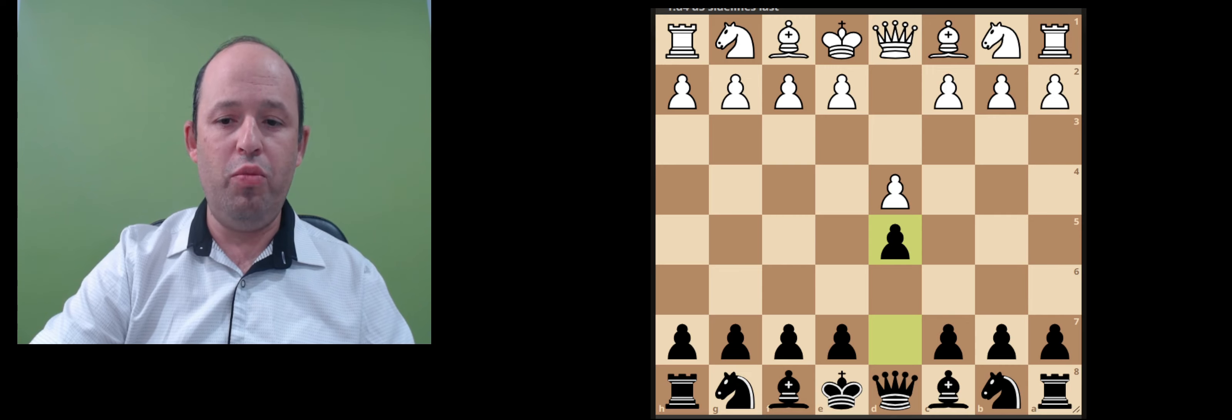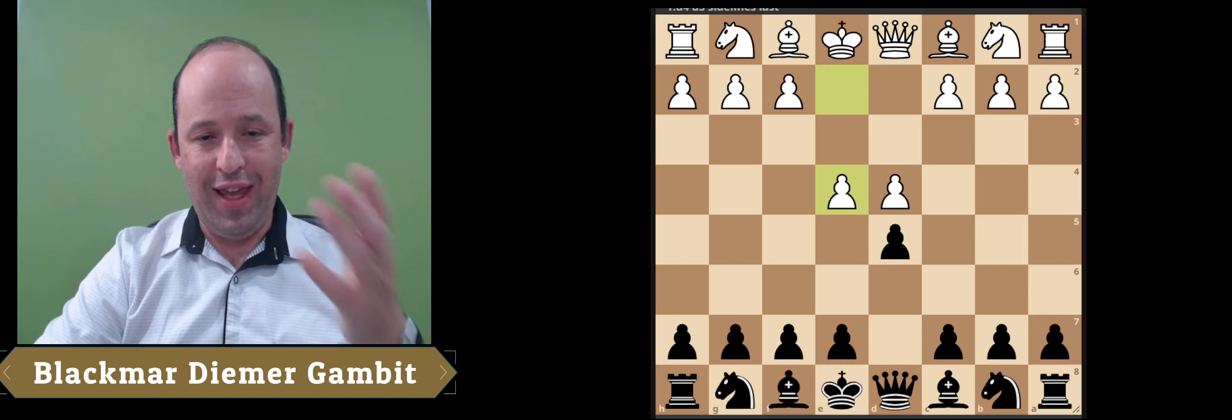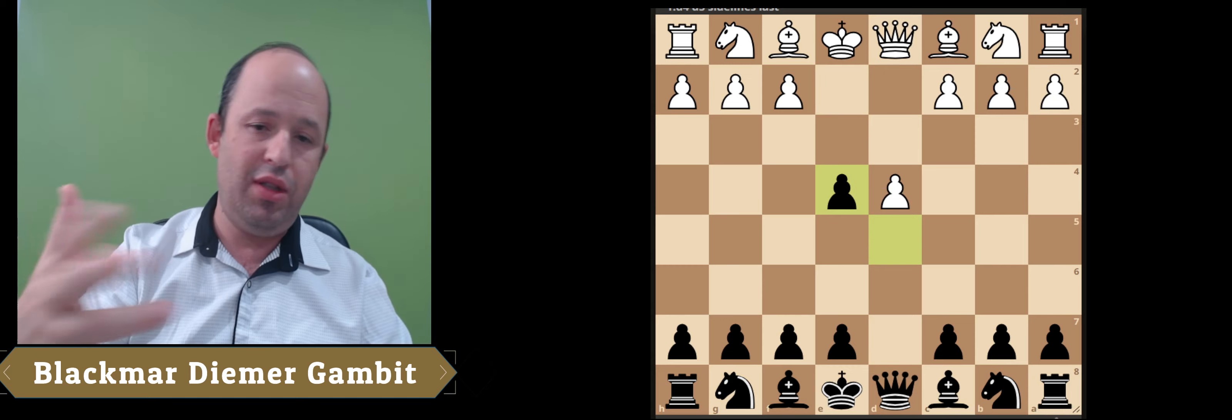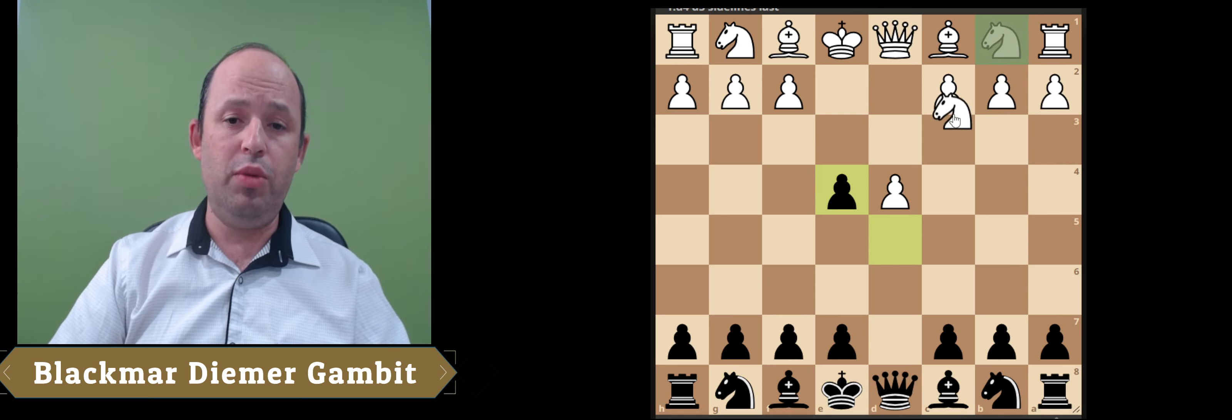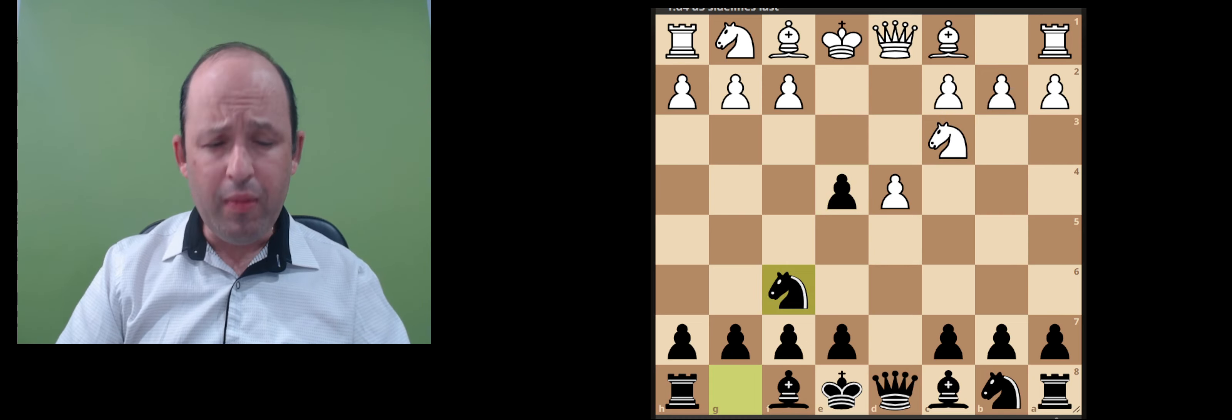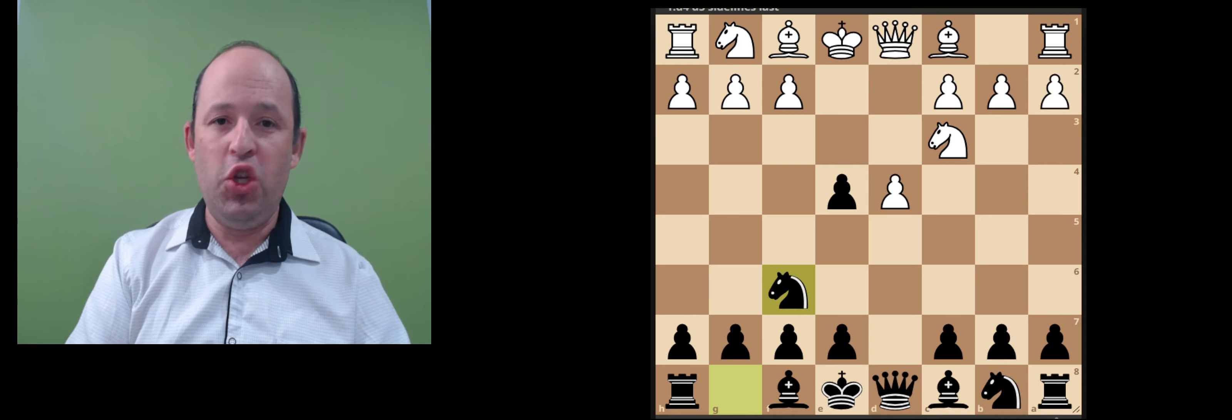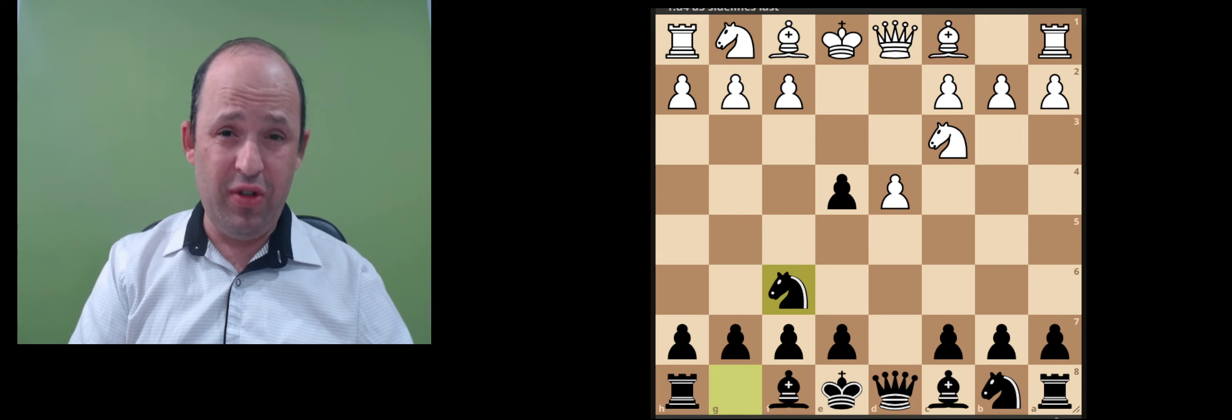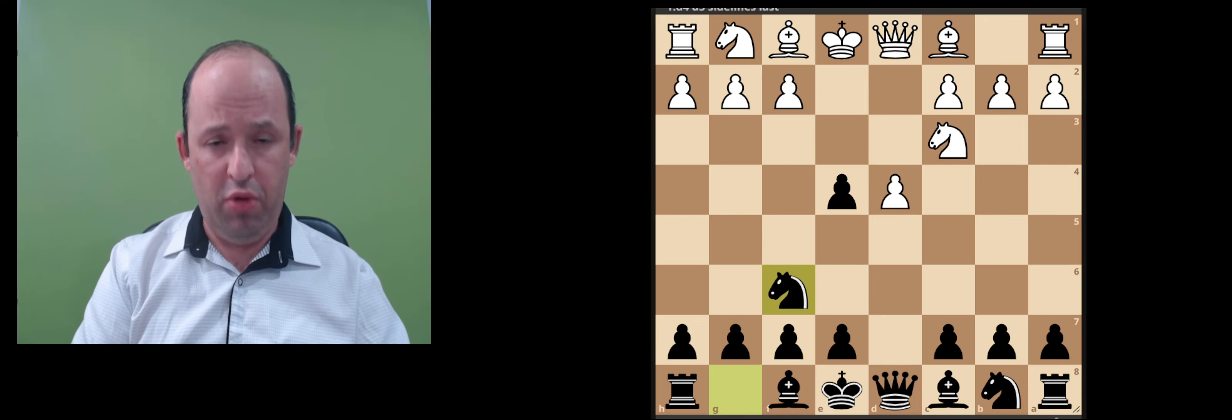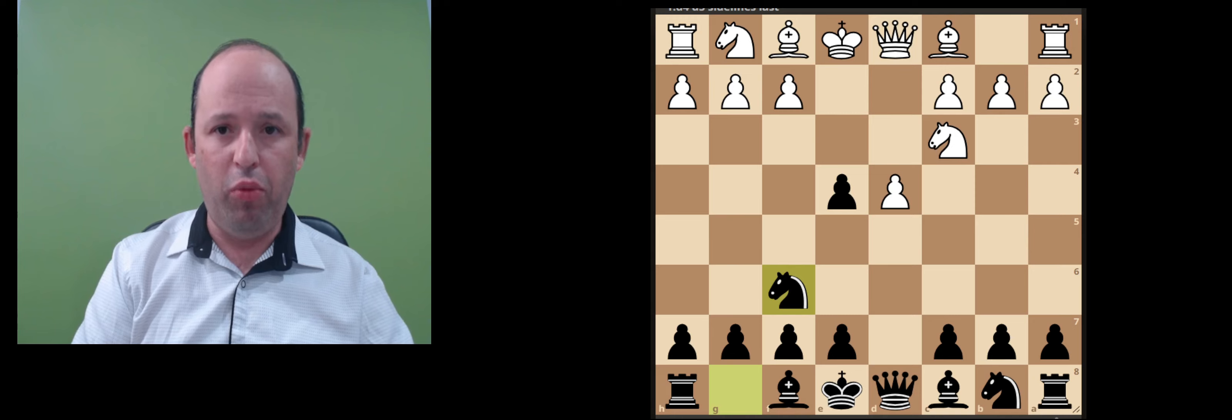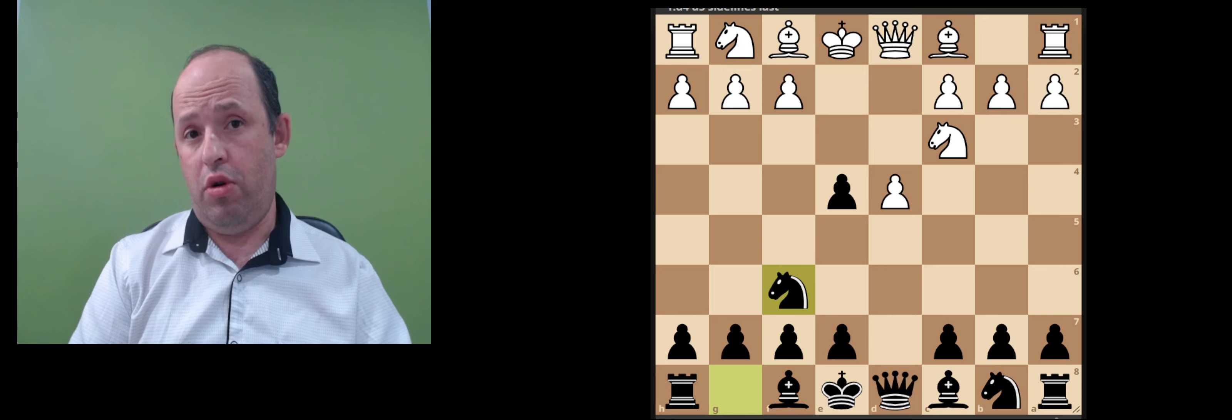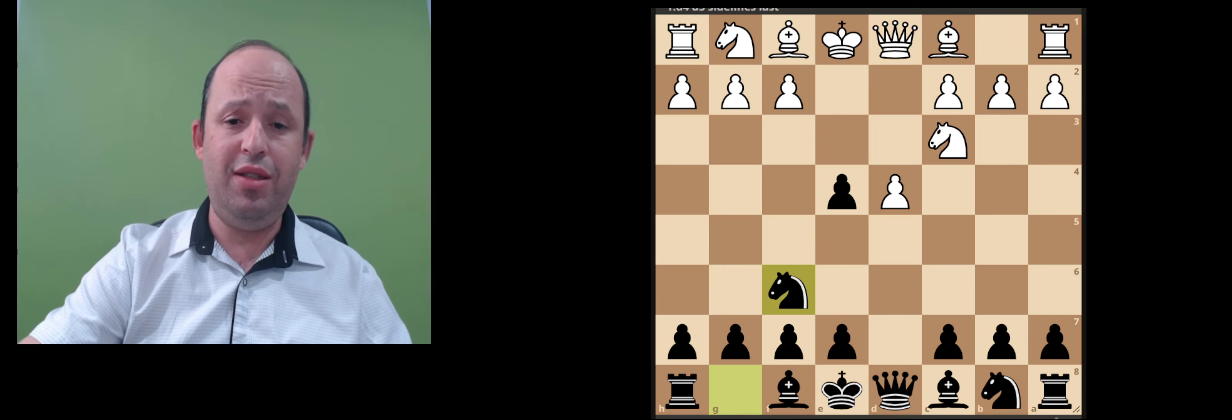First of all, I would like to mention that we will have Blackmar-Diemer Gambit, which starts with move e4 d4 and now White plays different starts, mainly Knight c3, and we respond with Knight f6. You don't see this variation too often on the high level, but it's a pretty dangerous line if you don't know the theory. If you know, you are good to go with probably better chances for Black.